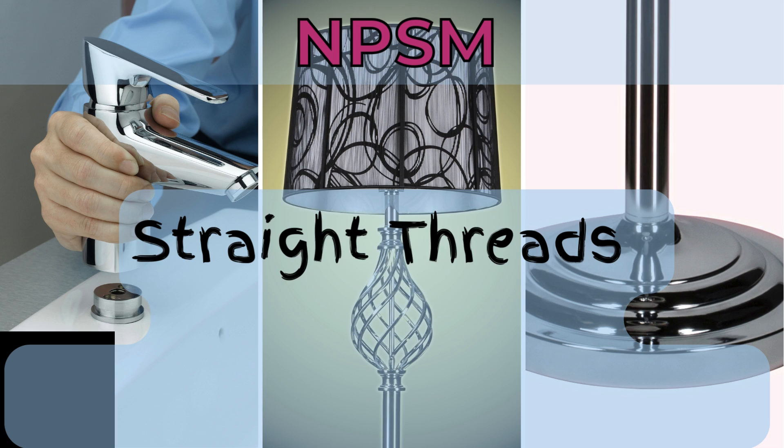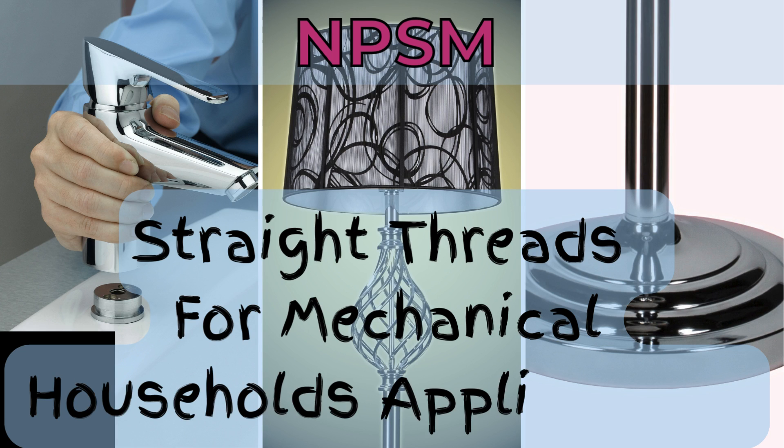NPSM is a straight pipe thread for free-fitting mechanical joints, creating a non-pressure-tight connection. It is mainly used in mechanical joints and special applications with no internal pressure and no sealing requirements. However, it is possible to achieve a seal with the aid of an O-ring.